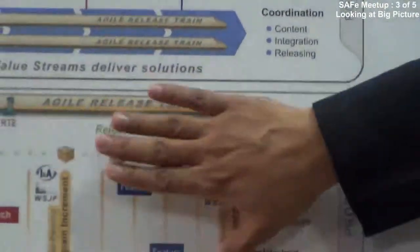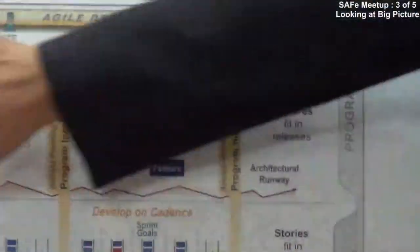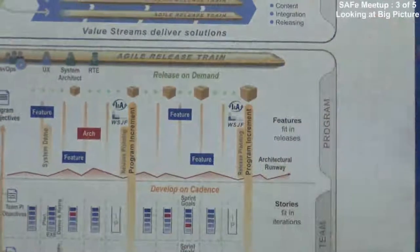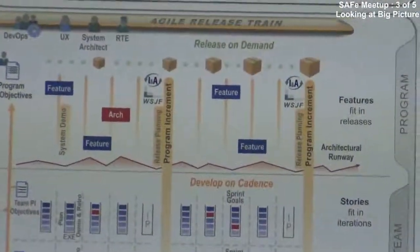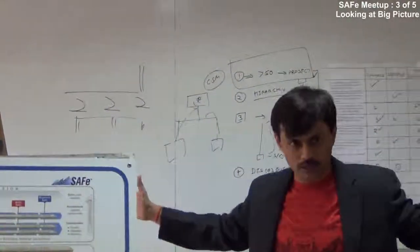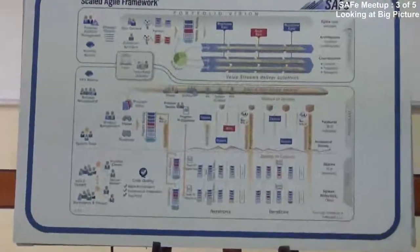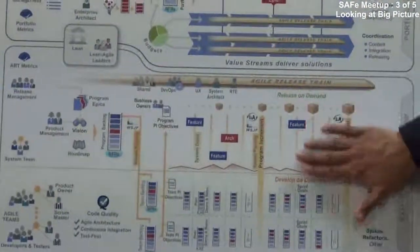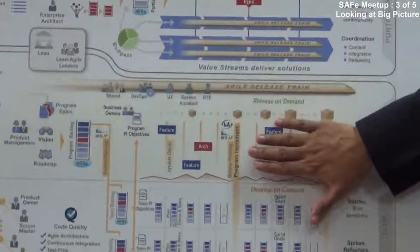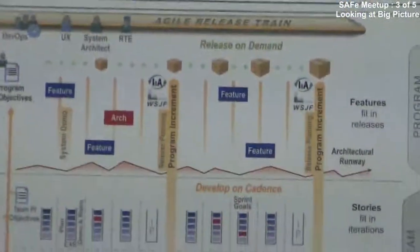At the program level — the second level — everything is about Agile Release Train management. Whatever happens at the 50 to 125 or 140 people level is all about the train. This segment has practices which help in doing program management, and the goal of this layer is integrating the work done by the teams.